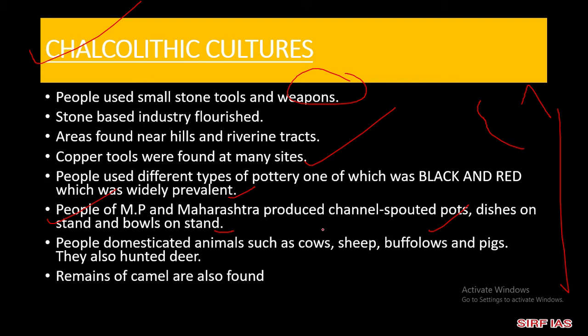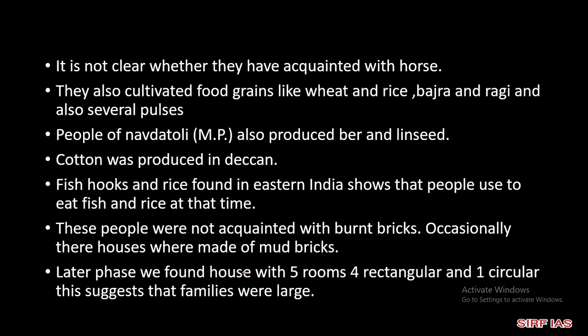लोग animals को domesticate करते थे — जैसे cow, sheep, buffalo, pig। साथ ही साथ यह deer को भी hunt किया करते थे। Camel के remains भी देखने को मिले हैं — ऊँट भी यहाँ पे देखने को मिला है। यह बात clear नहीं है कि horse रखते थे कि नहीं रखते थे — इस बारे में कोई surety नहीं है।